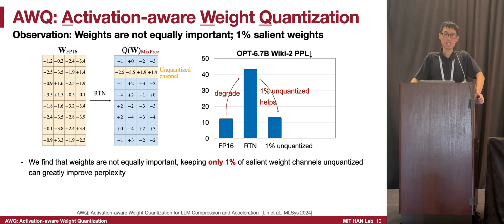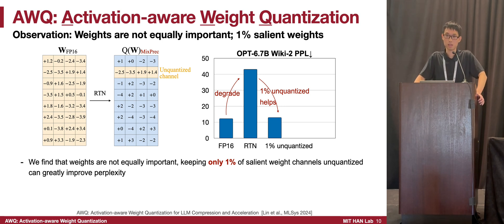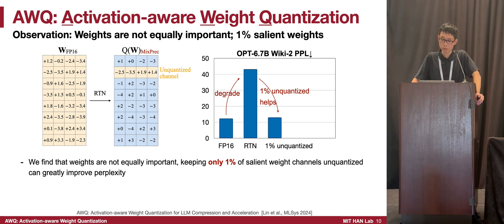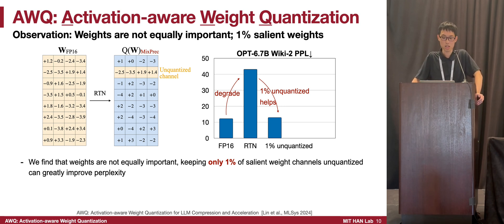It's natural to think about strategies to solve this problem. We found that if we keep some channels unquantized by identifying salient channels within the entire weight tensor, we are able to well-preserve quantization accuracy. As shown in this figure, if we keep 1% of the salient channels unquantized, the perplexity goes back from around 40 to around 10.